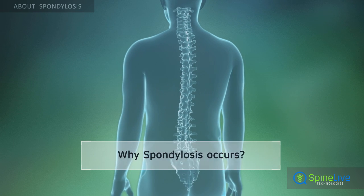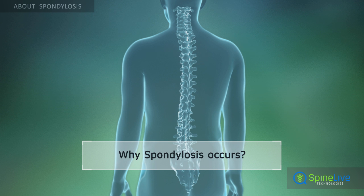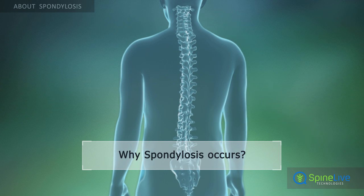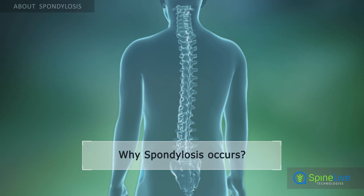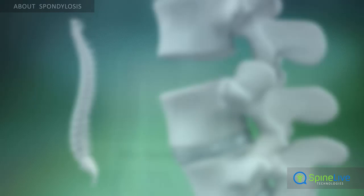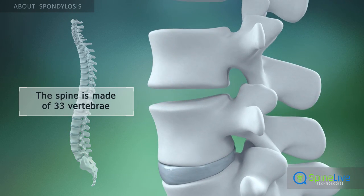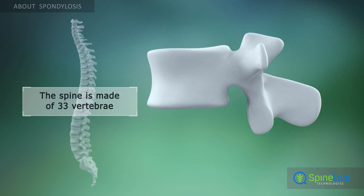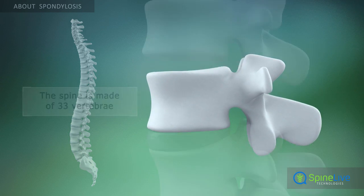In order to understand why spondylosis occurs, it is helpful to know the basic anatomy of the spine. The spine is made up of 33 individual bones, called vertebrae.